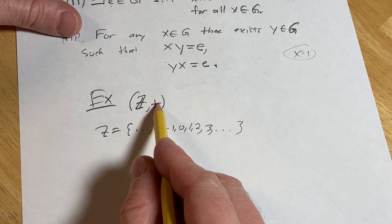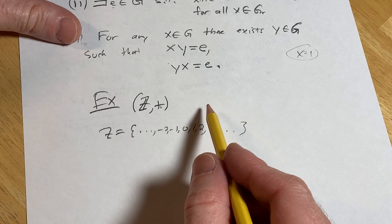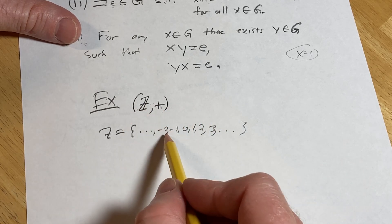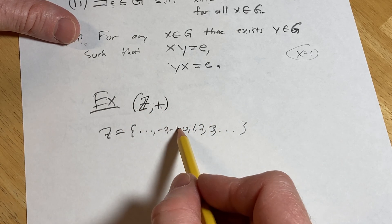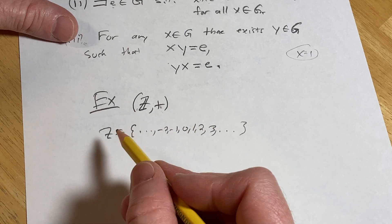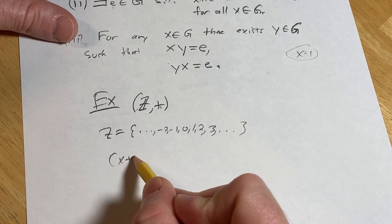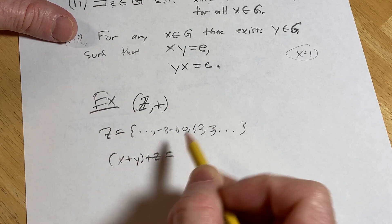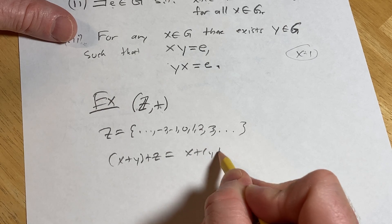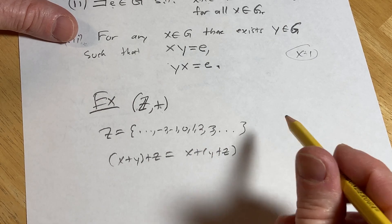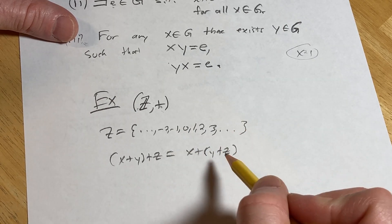Addition here is the binary operation. X plus y is always an integer, so you have a binary operation. It's associative. No problems with addition. It would be x plus (y plus z). It's the same thing as (x plus y) plus z. So that works.